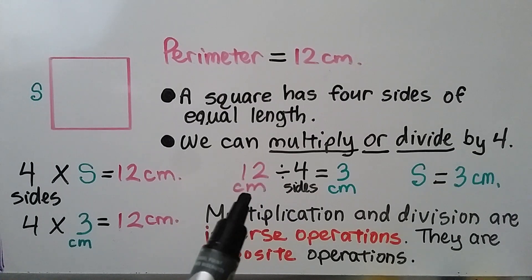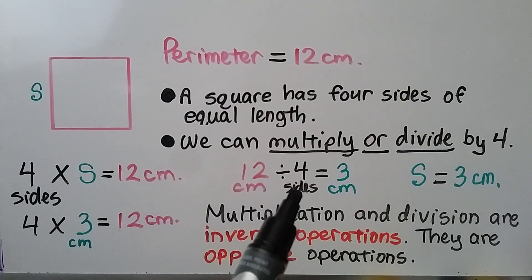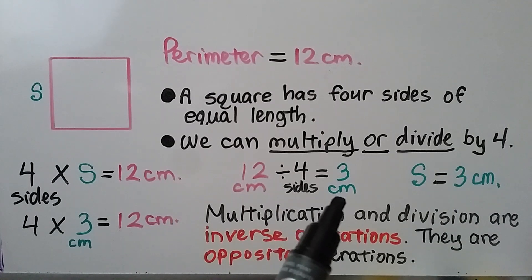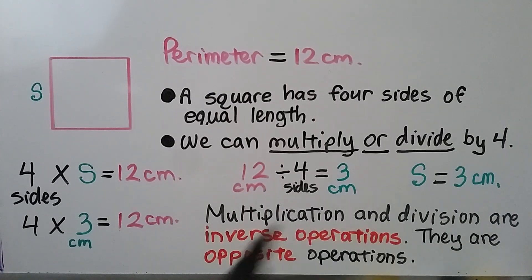We can divide. We can have the 12 centimeters for the perimeter and divide it by the 4 sides. That equals 3 centimeters. We know s equals 3 centimeters. And multiplication and division are inverse operations. They are opposite operations. That's why it worked.